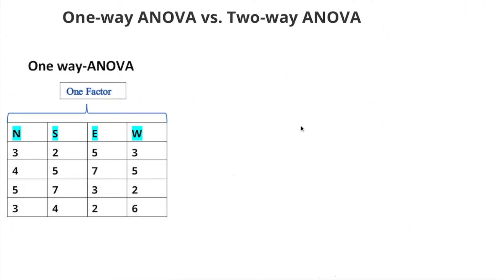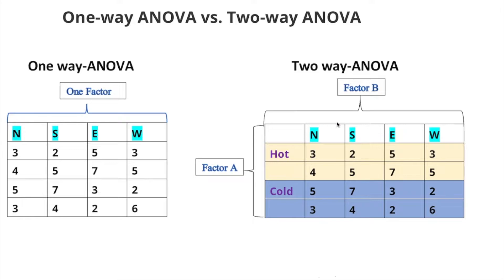Next we have two-way ANOVA. This one has Factor B and Factor A, and of course this one has categories also. It's cut into half as two rows down here with the coloring hot and cold. Notice that this one has two factors.